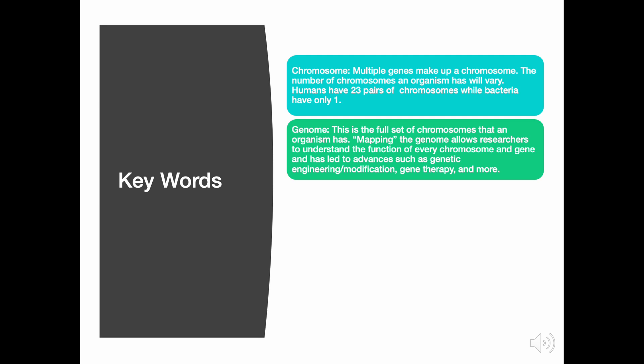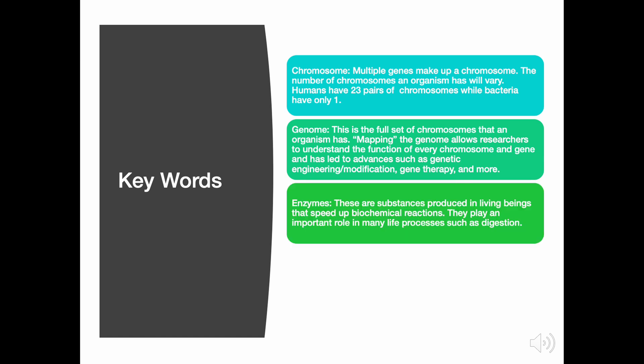Mapping the genome allows researchers to understand the function of every chromosome and gene, and has led to advances such as genetic engineering, genetic modification, gene therapy, and more. Enzymes are substances produced in living beings that speed up biochemical reactions, and they play an important role in many life processes such as digestion.